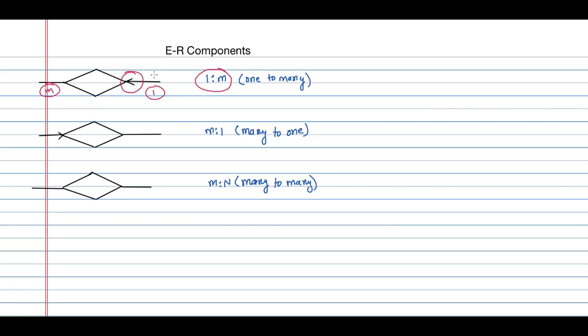So whenever you use this side that is it is a one to many or you can say one side. And here you can see it is representing many to one. This is the many side this is the one side. So it is many to one side and this is representing in both the sides the relation is many to many relationship.